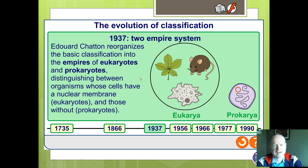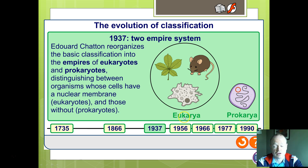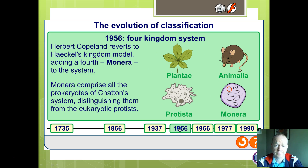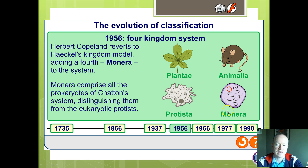It was further defined into two empires: the Eukarya or Eukaryota, and the Prokarya, the Prokaryota. Eukaryotes have a true nucleus; prokaryotes have no nucleus or no membrane-bound organelles. Then we started thinking about different characteristics and went to four kingdoms, where the bacteria or Monera became important and gained a kingdom.